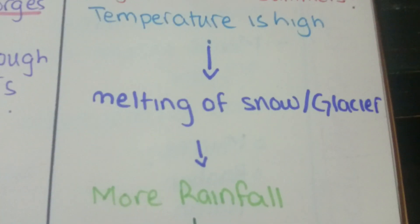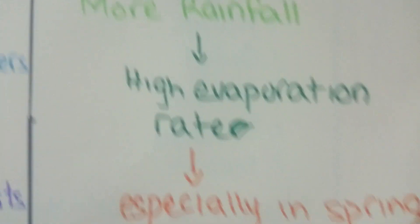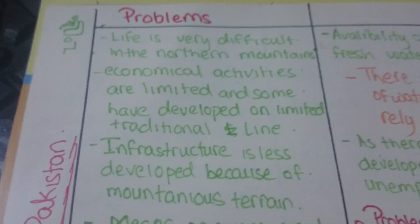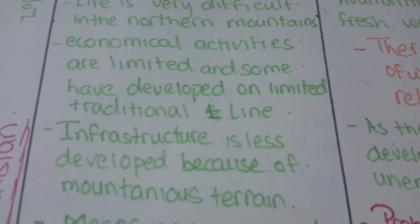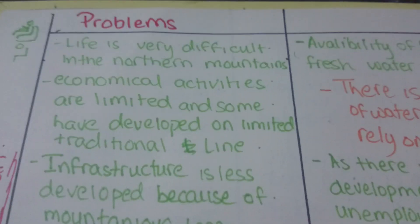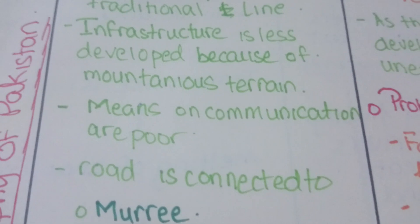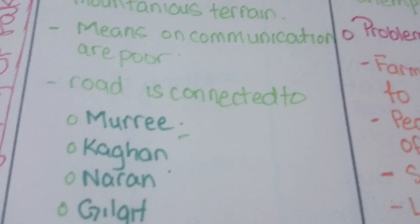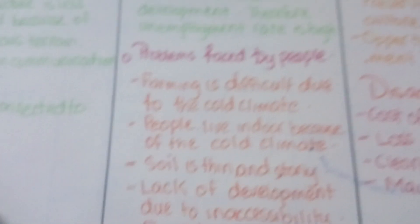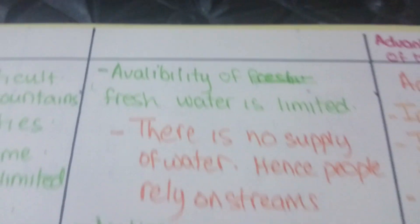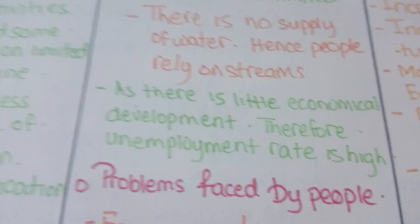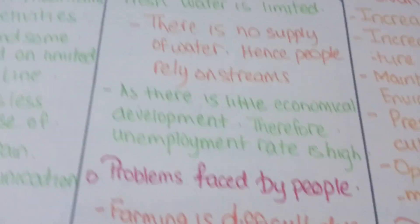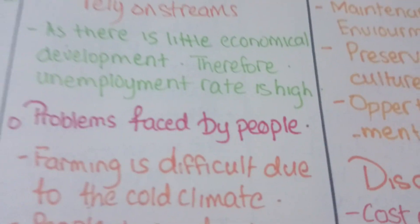High volume in summer is due to high temperatures causing melting of snow, more rainfall, and high evaporation rate. People in the northern mountains face great difficulties as there are limited economic activities. Infrastructure is less developed because of mountainous terrain; means of communication are poor, with roads only connecting Murree, Kagan, Naran, Gilgit, Hunza, Skardu, and Swat. Schools and hospitals are very limited. Availability of water is limited and people rely on streams. Unemployment rate is high.